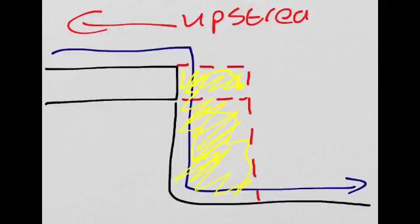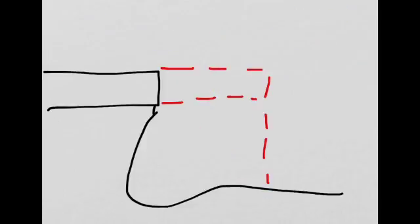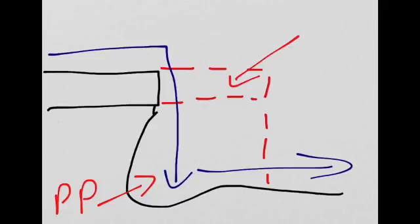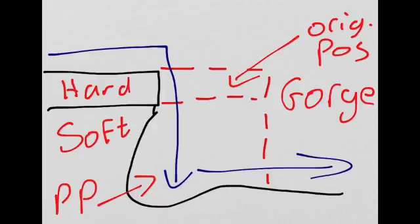This forms a steep gorge, which is represented by the yellow area on this diagram. That process I've just described is repeated over and over again as the waterfall retreats further upstream. Here you can see the river falls like this and then flows downstream. In this area here, we have our plunge pool. This dashed area represents the original position of the waterfall, which is now marked by a steep-sided gorge. Just to recap: this zone is the hard rock and this zone below is the soft rock. That is the process involved in the formation of a waterfall.